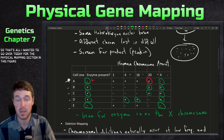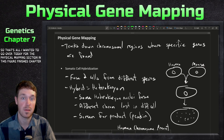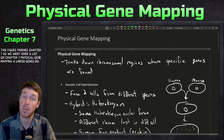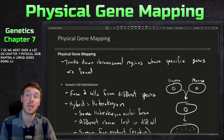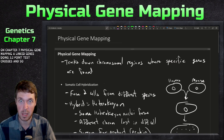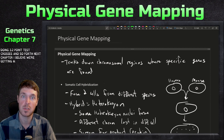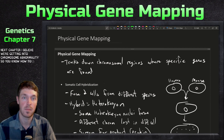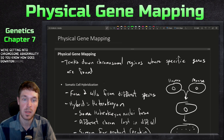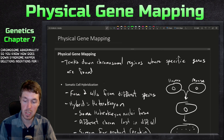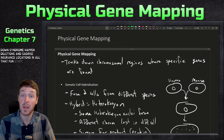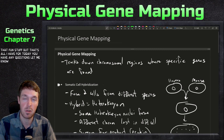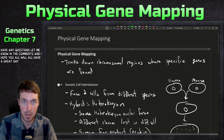That's all for the physical mapping section, and this finishes up chapter 7. We covered a lot in chapter 7 — physical gene mapping, linkage, two-point and three-point test crosses, and so forth. Next chapter we're getting into chromosome abnormalities: how things like Down syndrome happen, deletions, insertions, translocations, and all that. If you have any questions, leave them in the comments — have a great day!